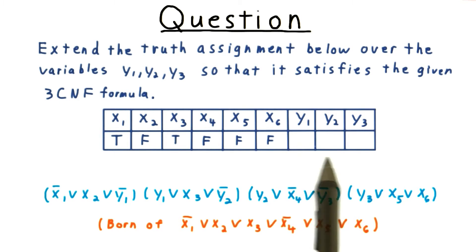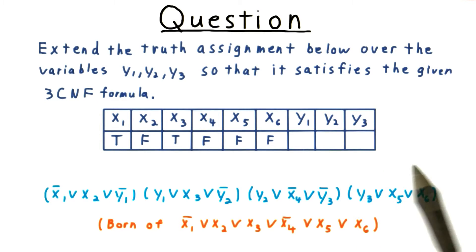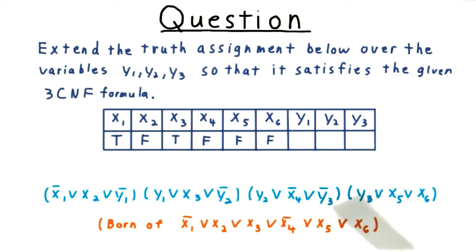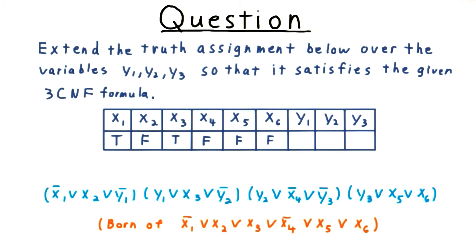I want you to extend the truth table below so that it satisfies the given 3CNF formula. This one is the image of this clause under the transformation that we've discussed.